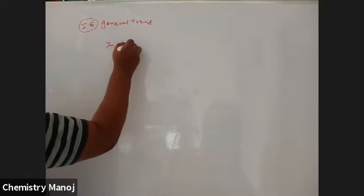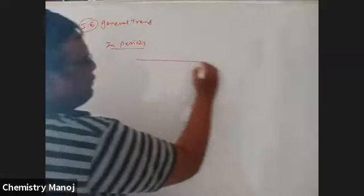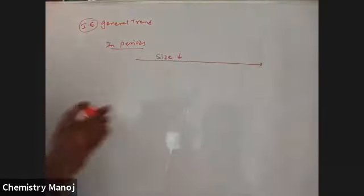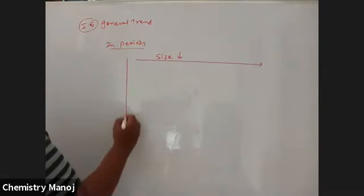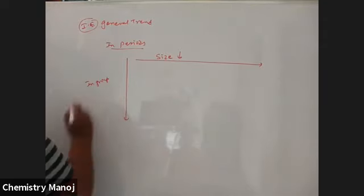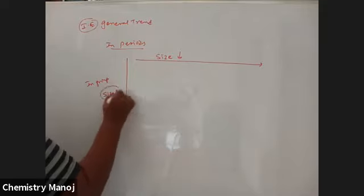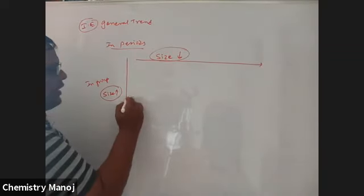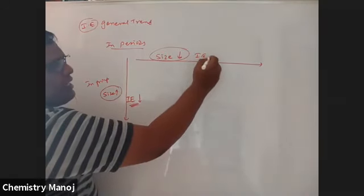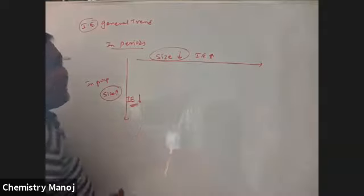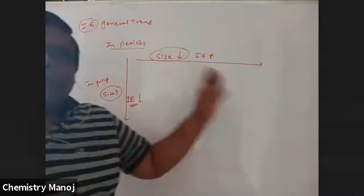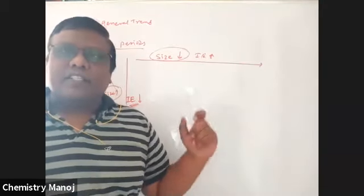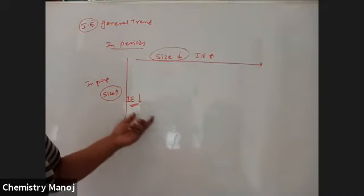General trend of ionization energy: in a period, from left to right, size decreases, so ionization energy increases. In a group, from top to bottom, size increases, so ionization energy decreases. Therefore ionization energy increases from left to right in a period, and decreases from top to bottom in a group.